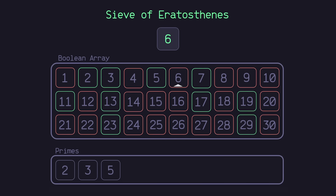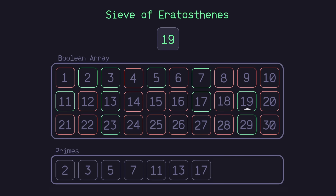6 is false in the boolean array, so we move on. 7 is true, so we add it to our list. This time we don't need to set any of 7's multiples to false because they've already been handled by previous primes — 7 comes after the square root of 30. For example, 14 was set to false by 2, 21 by 3, and 28 by 2. Our boolean array is now complete. Each remaining true value gives us the rest of our primes: 11, 13, 17, 19, 23, and 29.